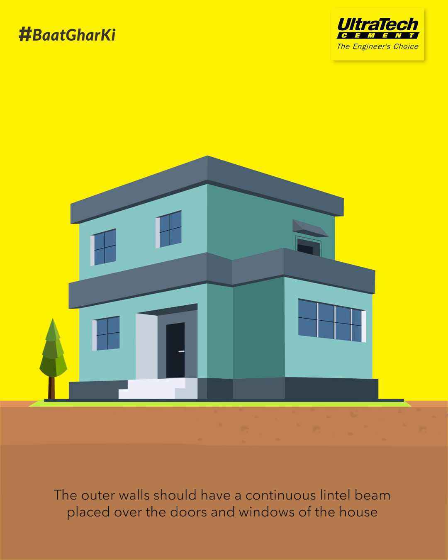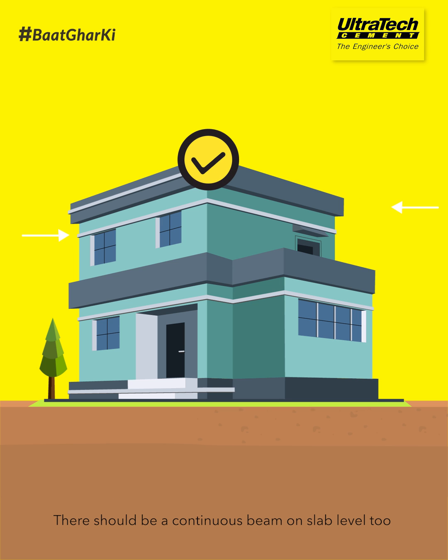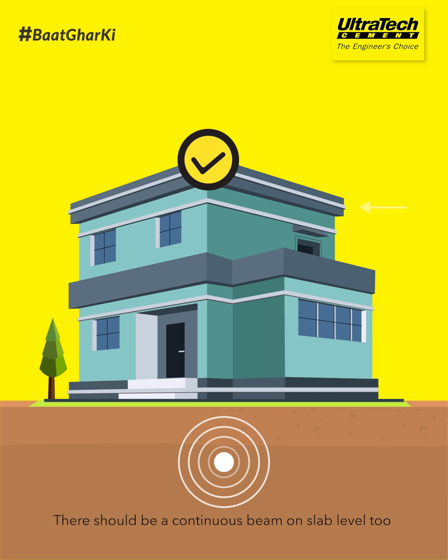The outer walls should have a continuous lintel beam placed over the doors and windows of the house. There should be a continuous beam on slab level too.